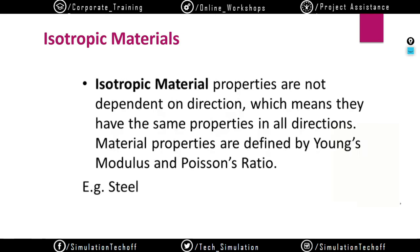Isotropic material properties do not depend upon direction — they have the same property in all directions. When you choose steel as an example, if you measure properties like Young's modulus and Poisson's ratio at any point — at the front, at the back, inside the volume — the properties remain constant. Although it may not be exactly constant, it's an assumption. Ideally, in the real-time world there are no perfectly isotropic materials; we just assume that steel and similar materials are isotropic for calculation purposes.